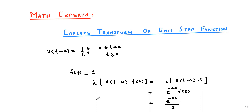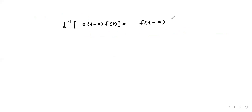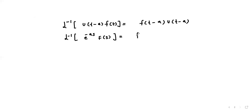So the Laplace transform of u(t - a)·f(t) is e^(-as) / s. Now we must also know the inverse Laplace of the unit step function. The inverse Laplace of e^(-as)·F(s) is equal to f(t - a)·u(t - a).